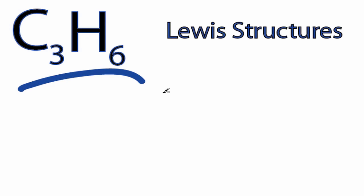This is a C3H6 Lewis structure. For C3H6, we have a total of 18 valence electrons.